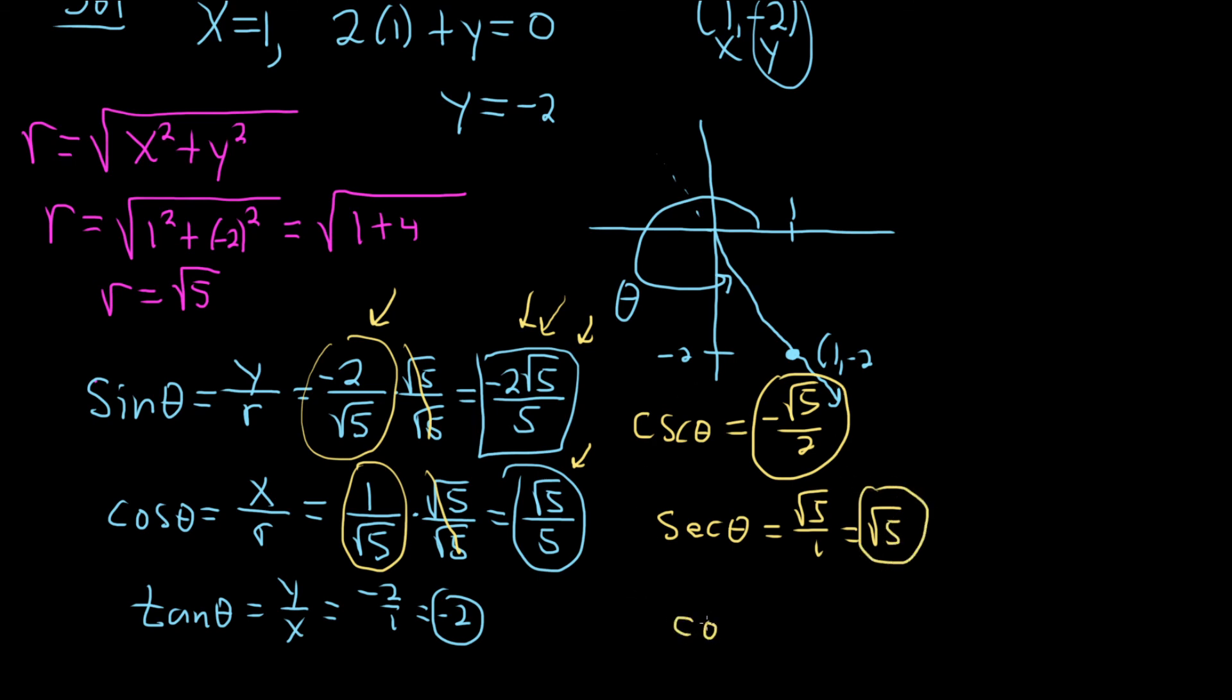The last one is the cotangent of theta. You just flip the negative 2. It's really negative 2 over 1, so when you flip it, you get negative 1 over 2. These are the reciprocal functions, so all you do is flip the previous answers. Once you get these answers, you just flip them to get these. I hope this video has been helpful.